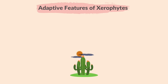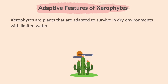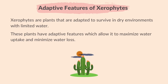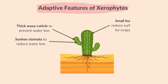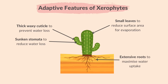Next, the adaptive features of xerophytes. Xerophytes are plants that are adapted to survive in dry environments with limited water. These plants have adaptive features which allow them to maximize water uptake and minimize water loss. They have a thick waxy cuticle on leaves to prevent water loss. Stomata are located in sunken pits to reduce water loss. They have small leaves, usually needle-shaped, to reduce surface area for evaporation. They have extensive roots to access water from deeper soil layers and maximize water uptake, and thick stems or leaves that store water for periods of drought.